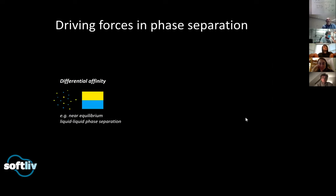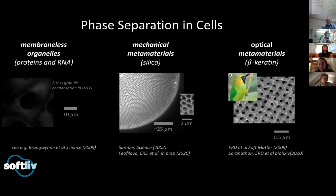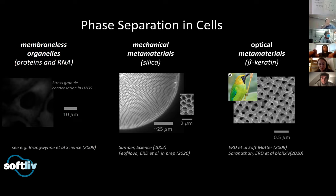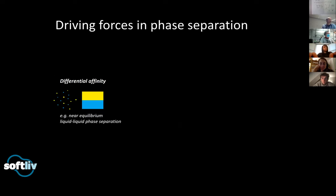Clarifying question: that middle image of the silica metamaterial — what organism is that from? That is a diatom. A diatom is a type of algae and they are very plentiful. According to Wikipedia, they produce 20% of the oxygen produced annually on Earth every year. There are many, many species of diatoms and they all have these glass cell walls. I could tell you more about them in the questions later on.